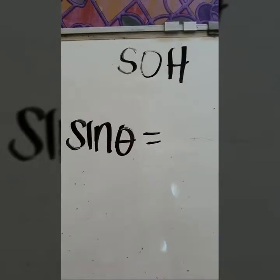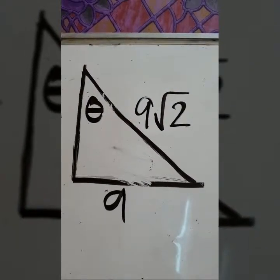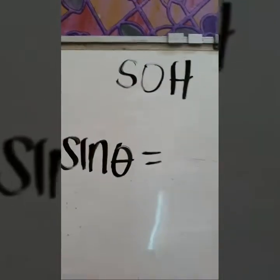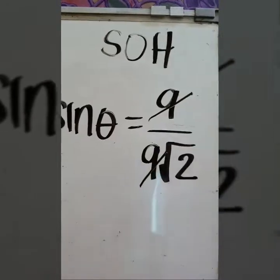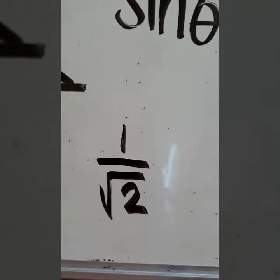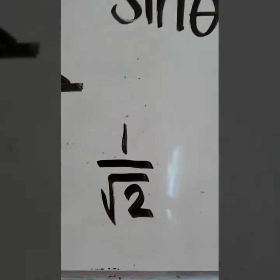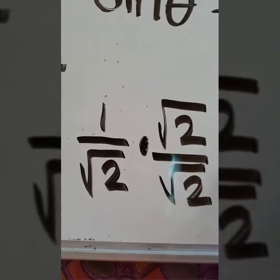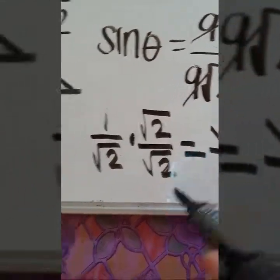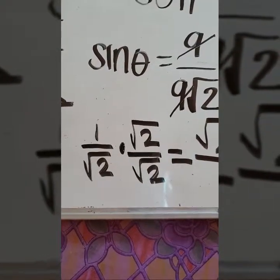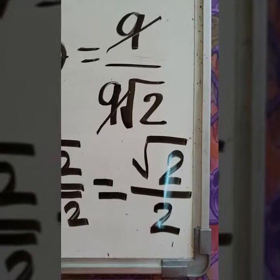Sine theta equals opposite over hypotenuse. The opposite side is 9 and the hypotenuse is 9 square root of 2. So sine theta equals 9 over 9 square root of 2. We can cancel 9 in the numerator and denominator, leaving 1 over square root of 2. Since the denominator has a square root symbol, we rationalize by multiplying by square root of 2 over square root of 2. 1 times square root of 2 equals square root of 2, and square root of 2 times square root of 2 equals square root of 4, which is 2. Therefore, sine theta equals square root of 2 over 2.